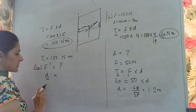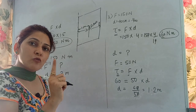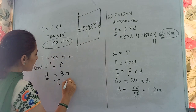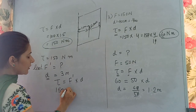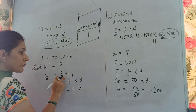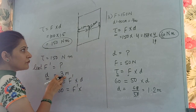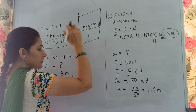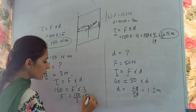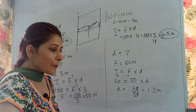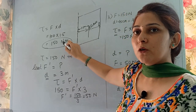Applying the formula: 150 = F' × 3, so F' = 150/3 = 50 newtons. When 50 newtons of force is applied at the handle — the extreme end of the door at 3 meters — we produce the required turning effect of 150 newton meters and are able to open the door.